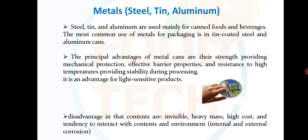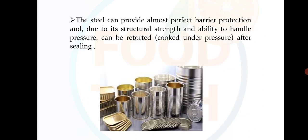The design advantage of metal cans is that contents are invisible. Disadvantages include heavy mass, high cost and tendency to interact with contents and the environment — internal and external corrosion may occur. Steel cans provide almost perfect barrier protection and due to structural strength and ability to handle chemical pressure, can be used in retorts — that is, cooked under pressure after sealing.